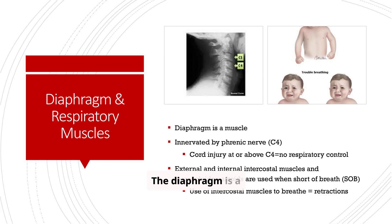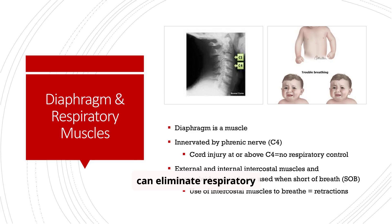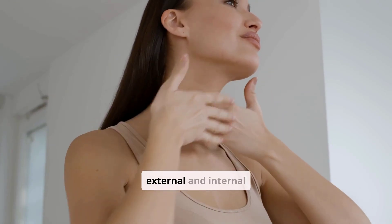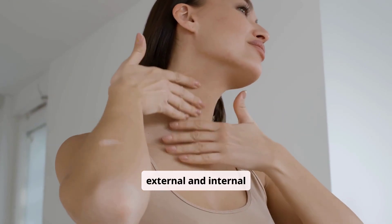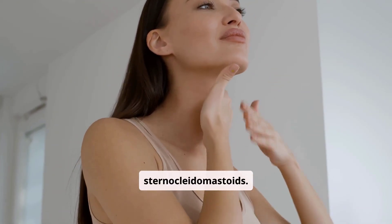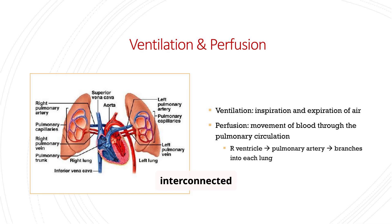The diaphragm is a muscle innervated by the phrenic nerve at C4. A cord injury at or above C4 can eliminate respiratory control. When patients are short of breath, they often use external and internal intercostal muscles and sternocleidomastoids. Ventilation and perfusion are two distinct but interconnected processes.